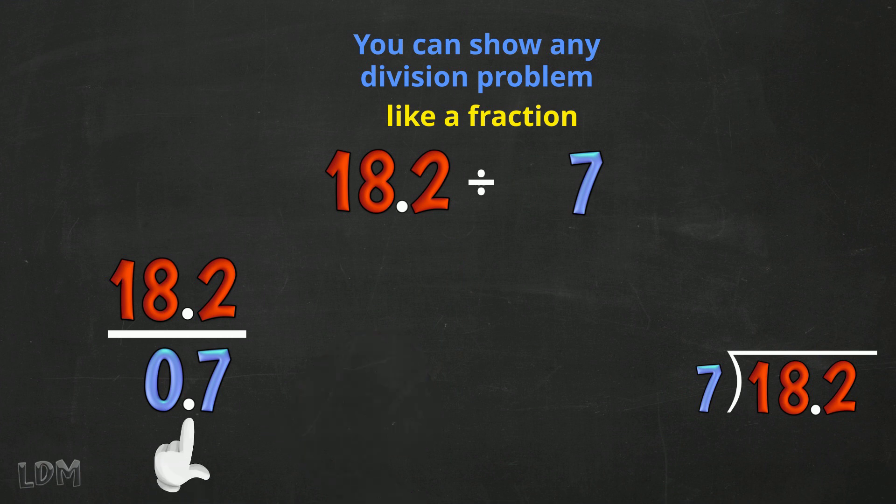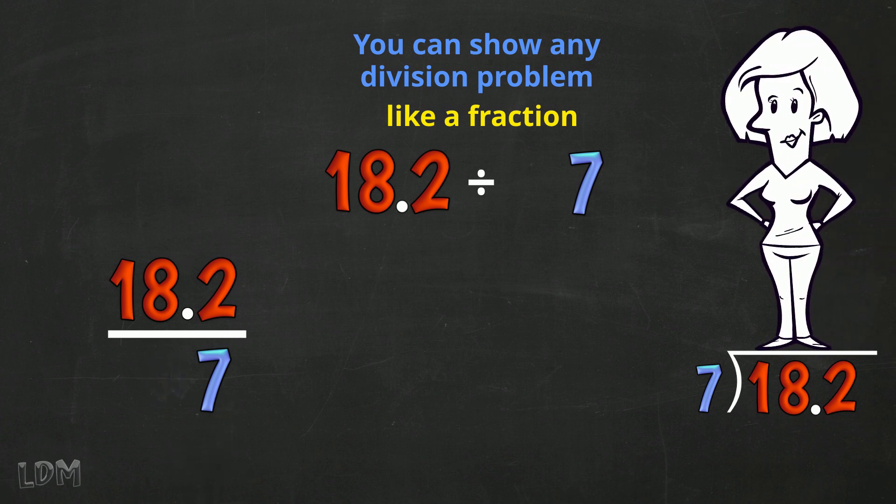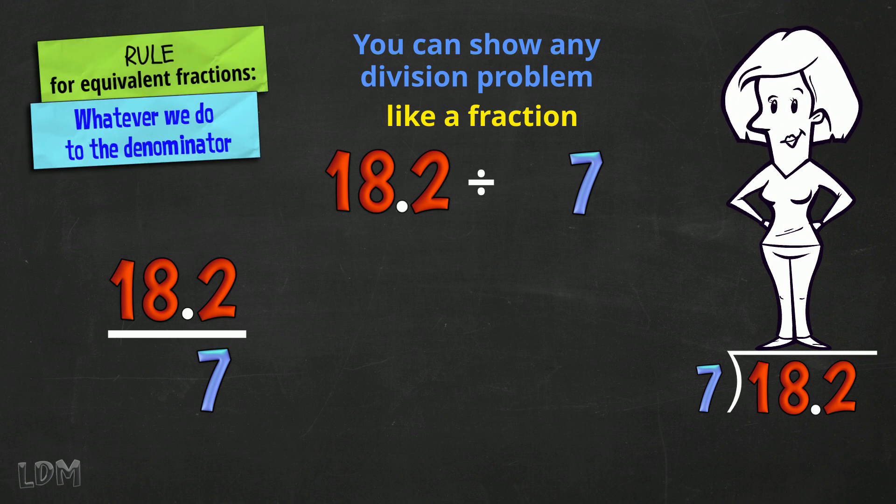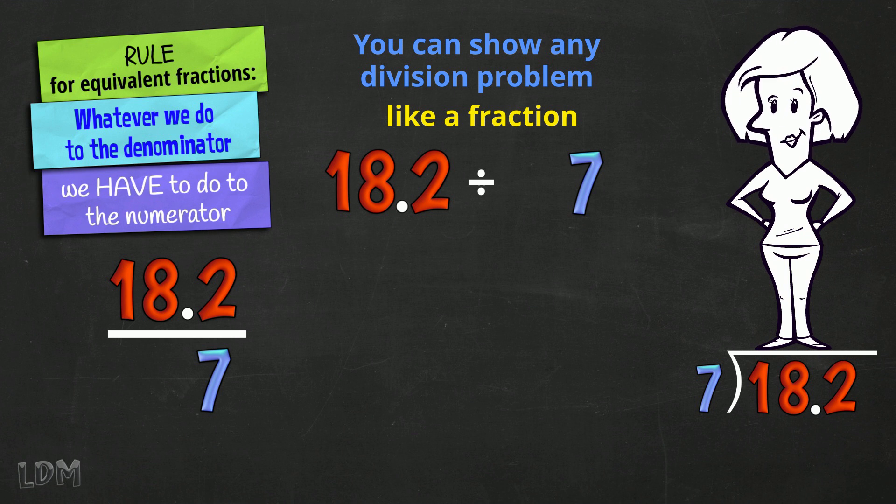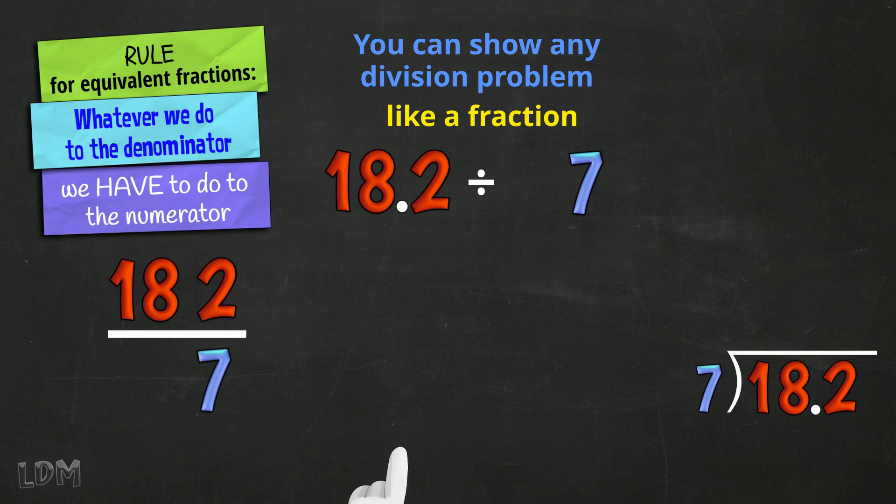Move the decimal point one place to the right and we get that! There's no mistaking what to do next. The rule for equivalent fractions says, whatever we do to the denominator, we have to do to the numerator. So we do the same here! And we get 182 over 7, or 182 divided by 7.